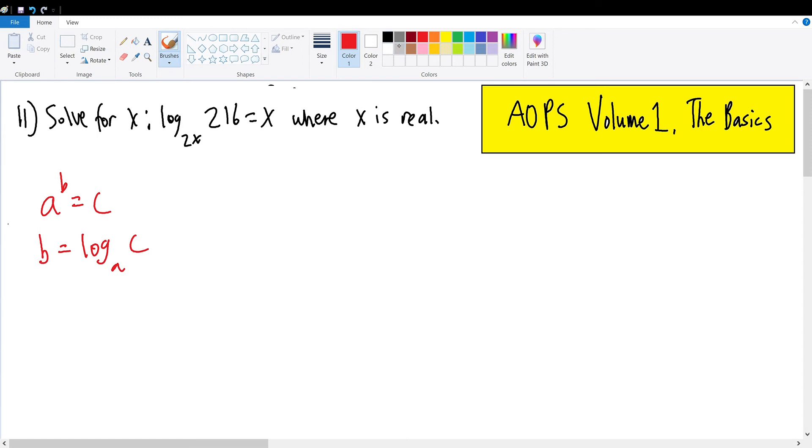Through this definition of the logarithm with respect to an equation like this one, we can evaluate this log to be equal to 2x raised to the x power equals 216. We can apply the exponent into each of the terms within it to get 2 to the x times x to the x equals 216.